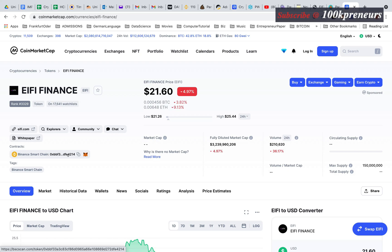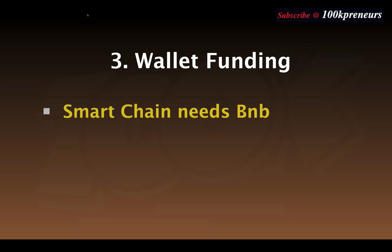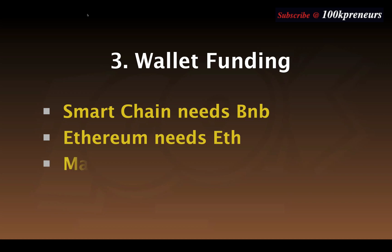The next step is to fund your wallet. Binance Chain tokens need BNB, Ethereum tokens need Ethereum, Matic tokens need Matic, TRC-20 tokens need Tron, and so on. Since IFI token is based on Smart Chain, we need BNB — Binance Coin.